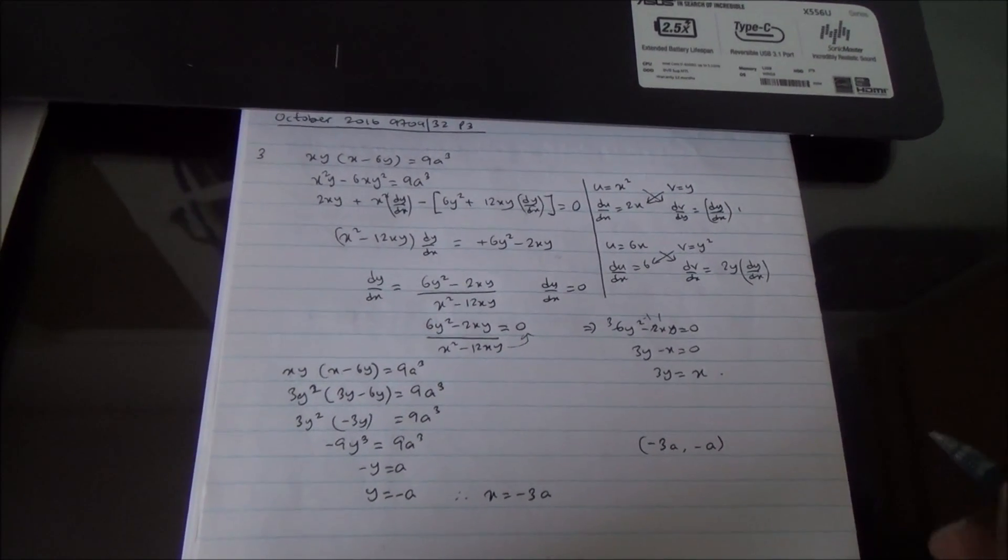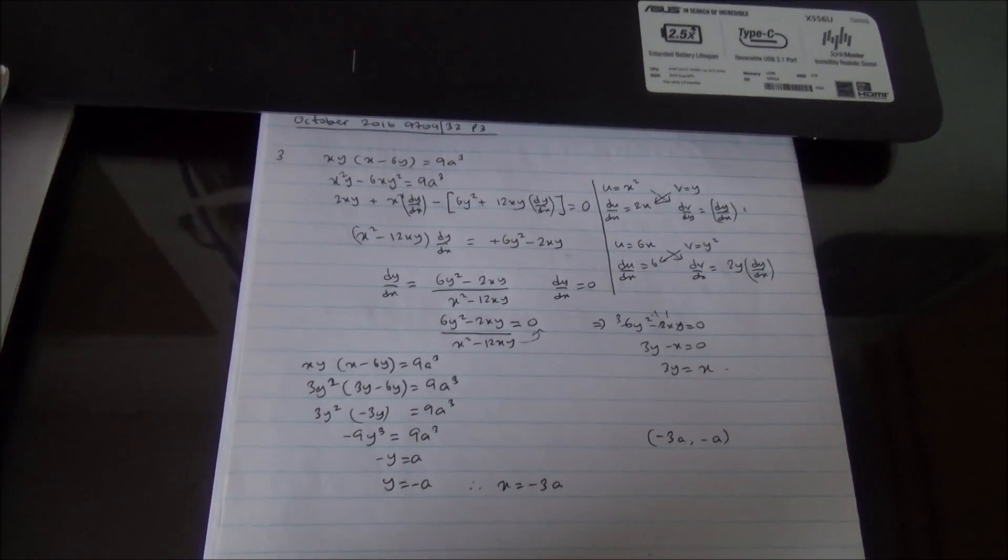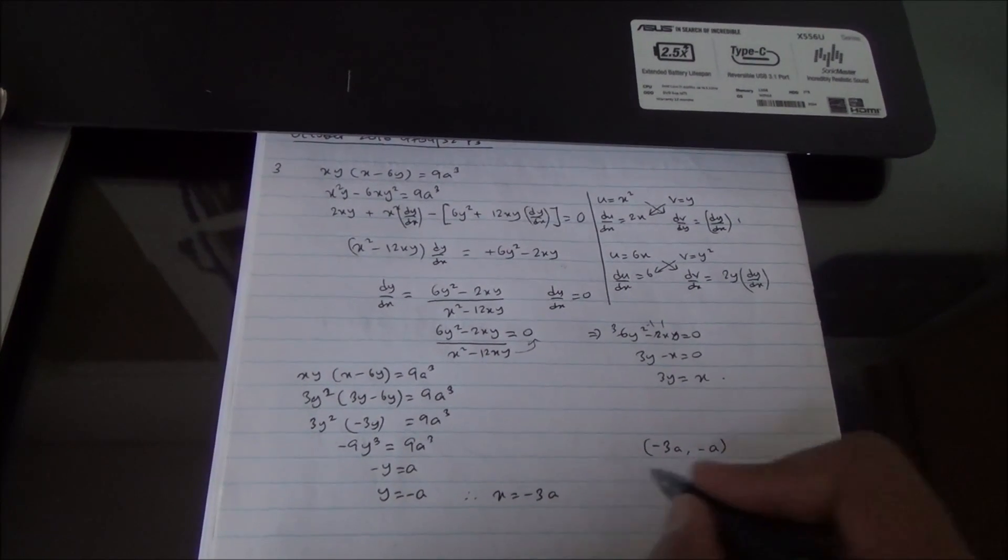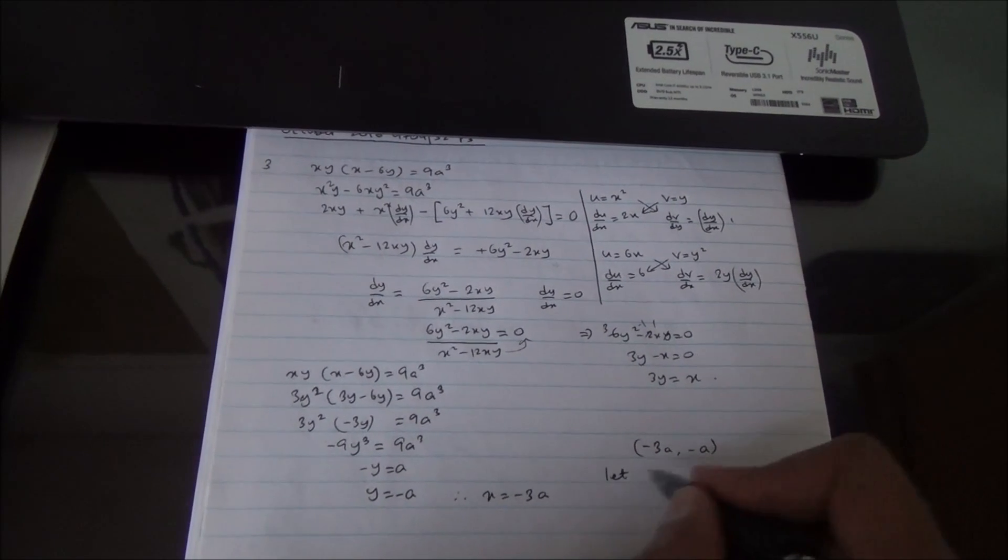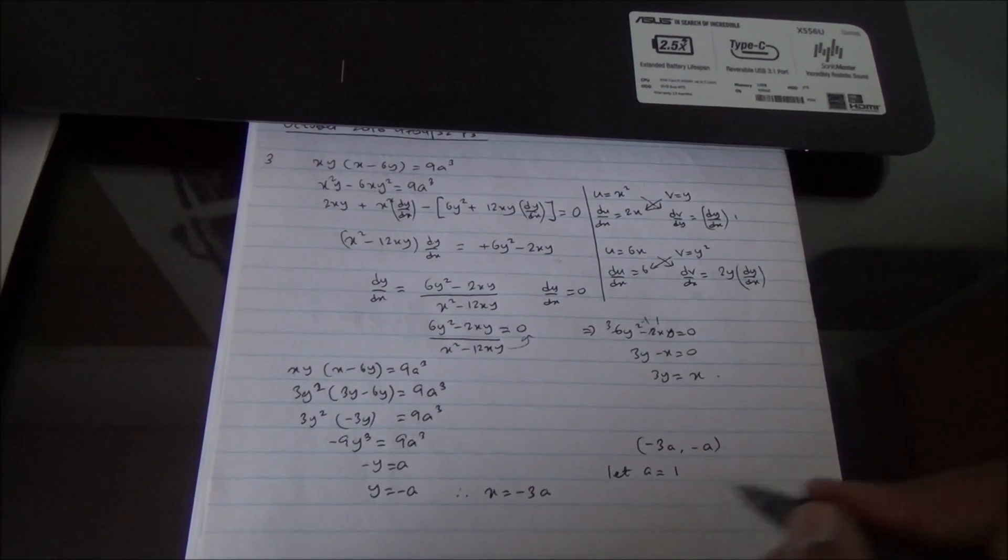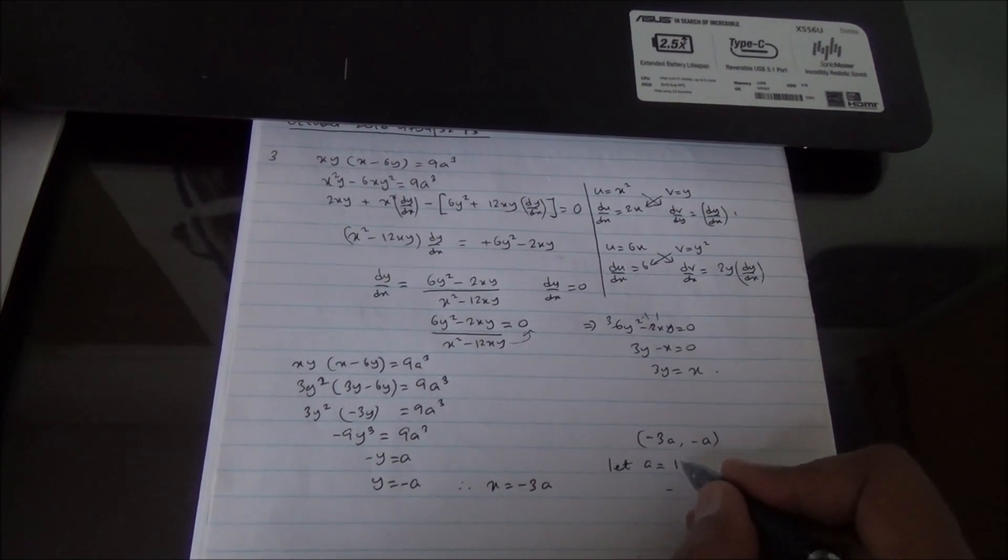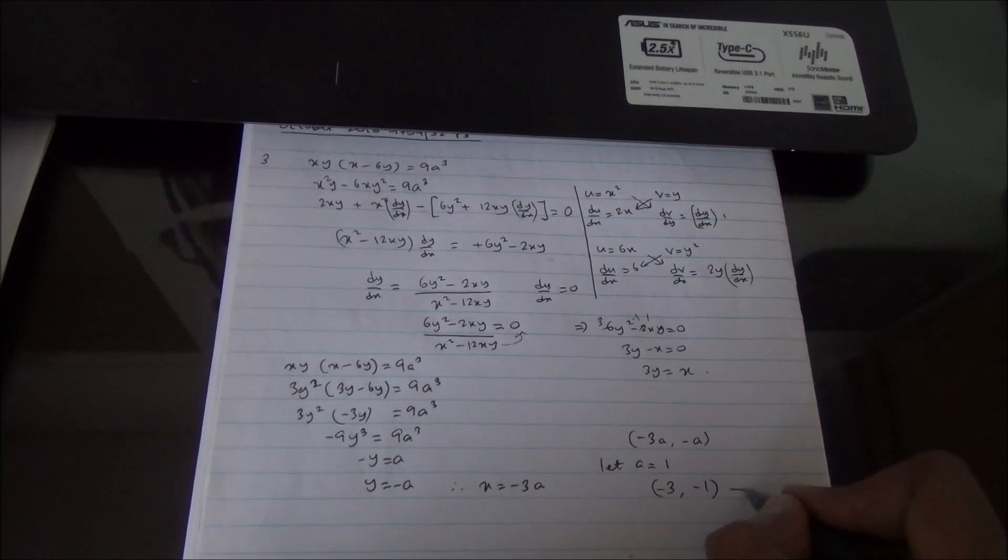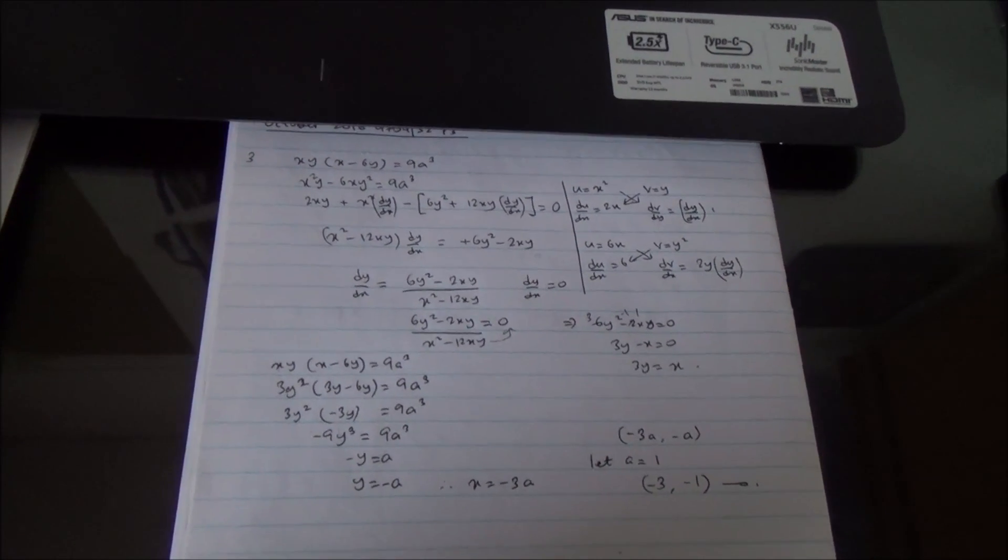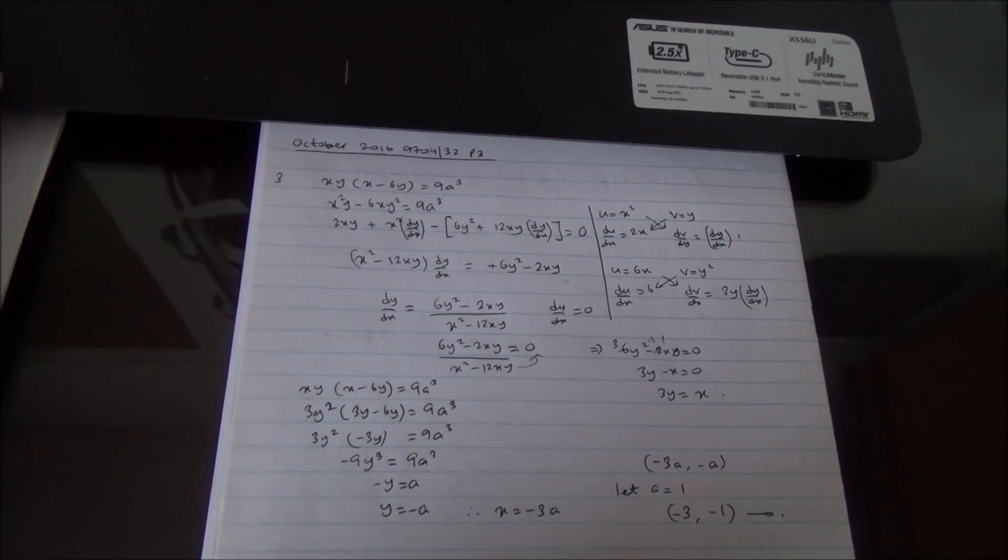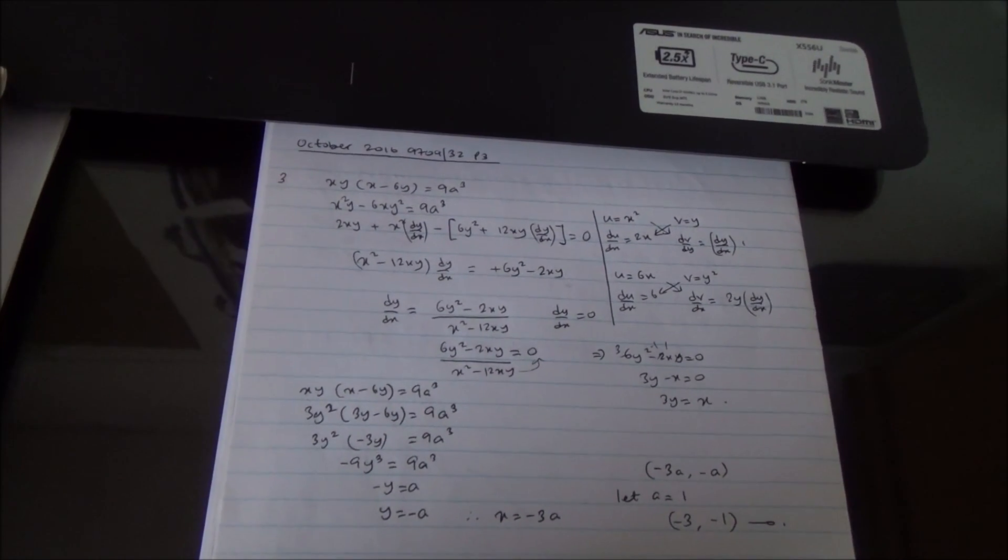Now, because a is a non-zero constant, under the assumption, if a is equal to any value, for that matter, let a is equal to, let's say, 1. What am I going to get? I'm going to get minus 3 times 1, which is minus 3, and minus 1. And this question is taken from October 2016, Advanced Level Math, HSE, paper 3. Take care.